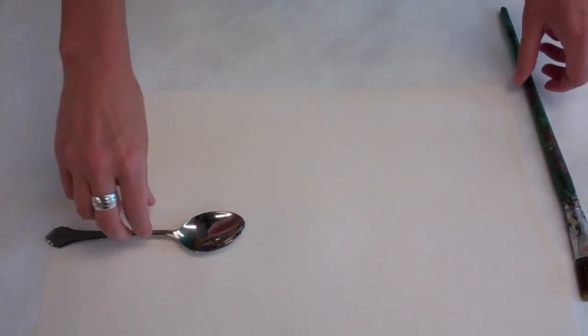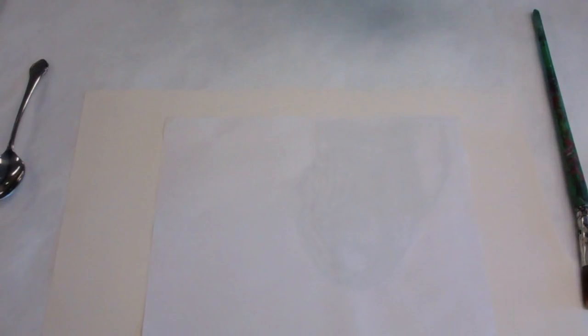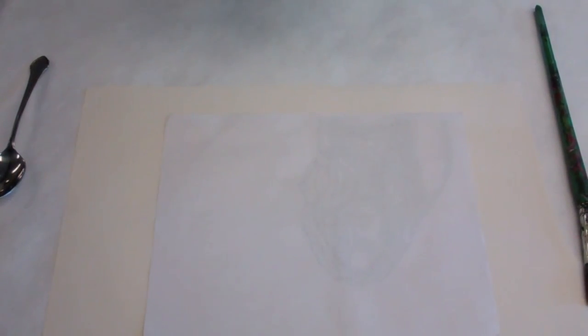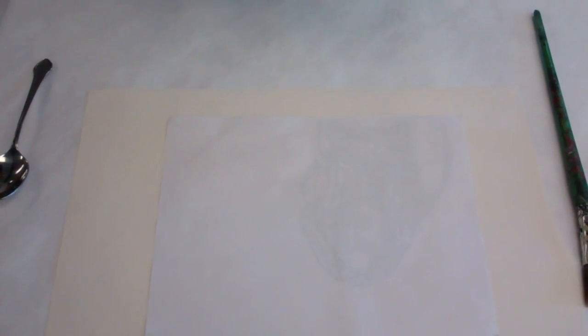Now get that stuff out of the way and I'll show you how it's done. You're going to take your Xeroxed image and put the ink side face down on your paper. You can tape it down or you can just hold the image. I like to tape it to make sure it's extra secure.